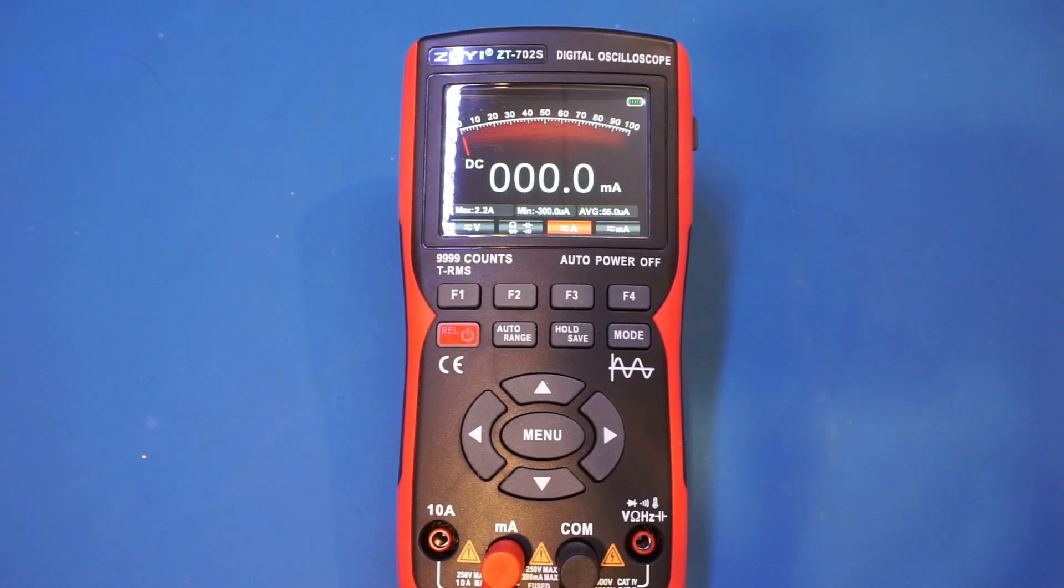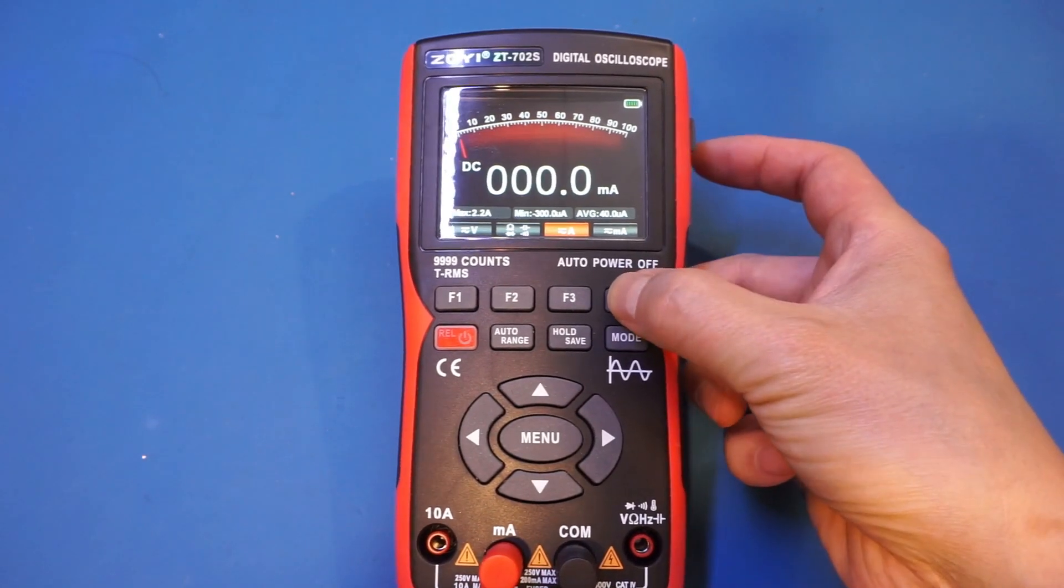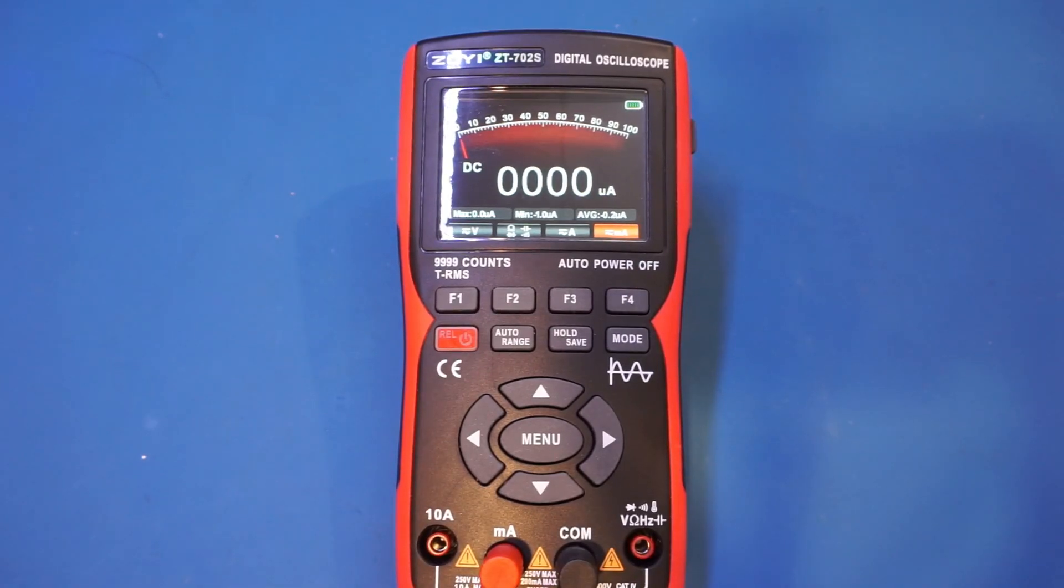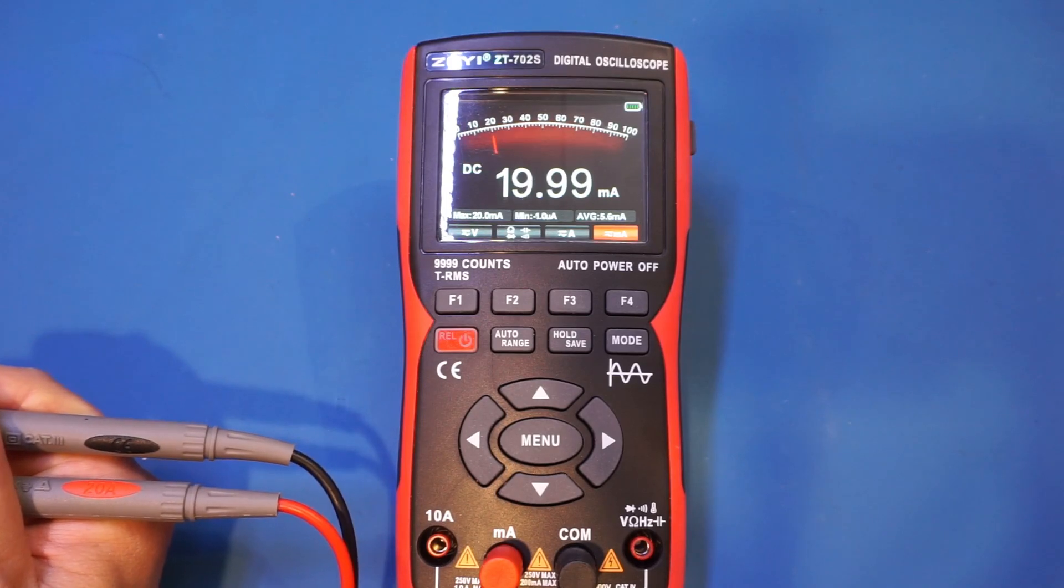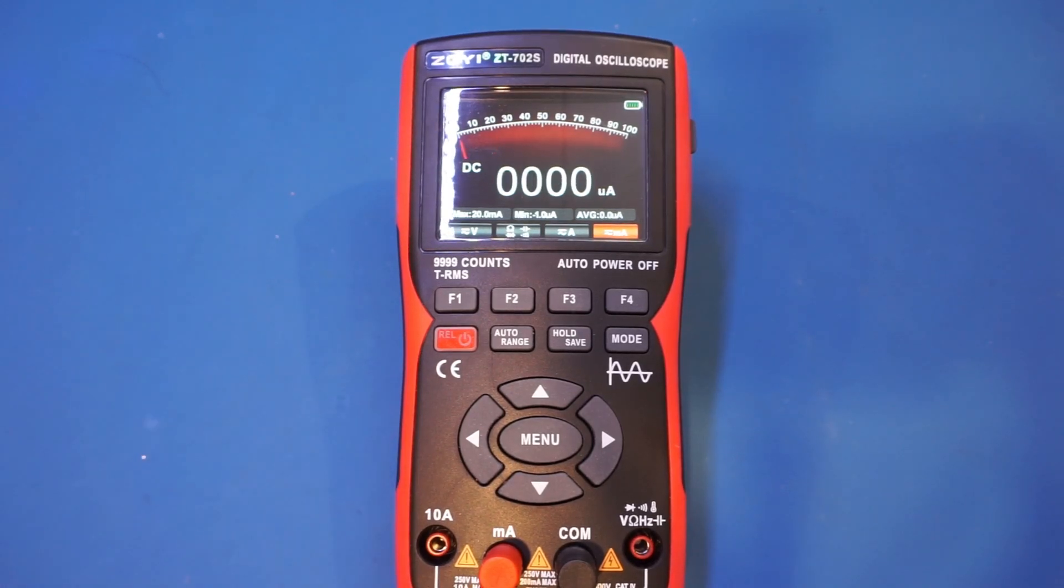To get to the correct reading, you will just need to press the range here to milliamp. And let's see again. So now we're reading 20 milliamps. Unfortunately for this meter,